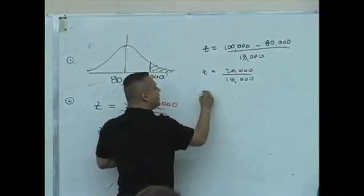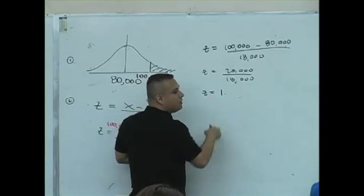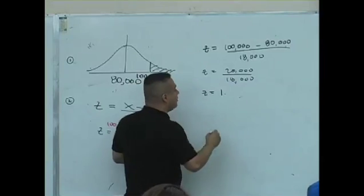And what is the value of Z then? Approximate this Z score to the nearest hundredths position. 1.11.